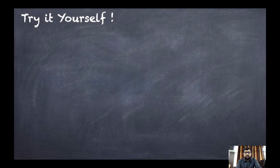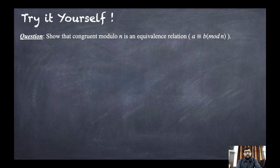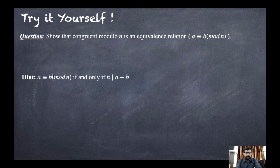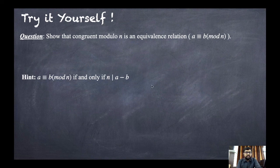As a practice problem: show that congruence modulo n is an equivalence relation. In symbolic form, a is congruent to b mod n. You need to check reflexivity, symmetry, and transitivity. Hint: a is congruent to b mod n if and only if n divides (a minus b). Use this definition and it follows similarly to the previous example.